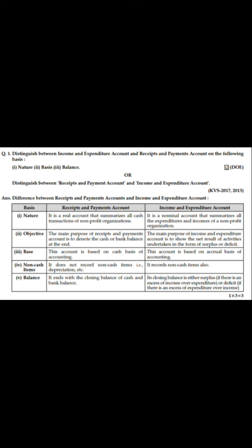In the case of Receipt and Payment Account, all transactions related to cash — whether of the current year, the previous year, or the next year — have to be written. While in the Income and Expenditure Account, we write all expenditures and income of the current year only.